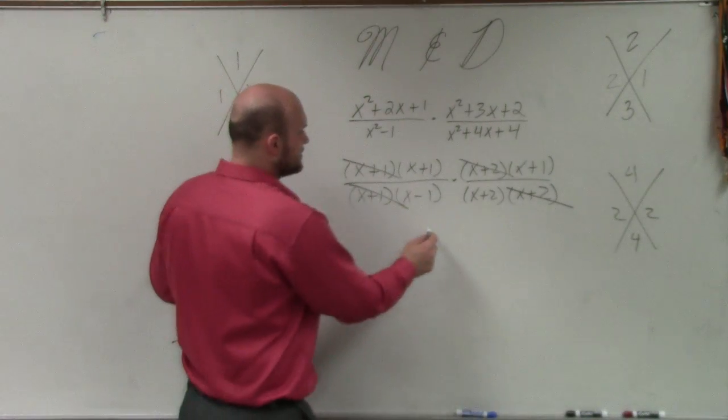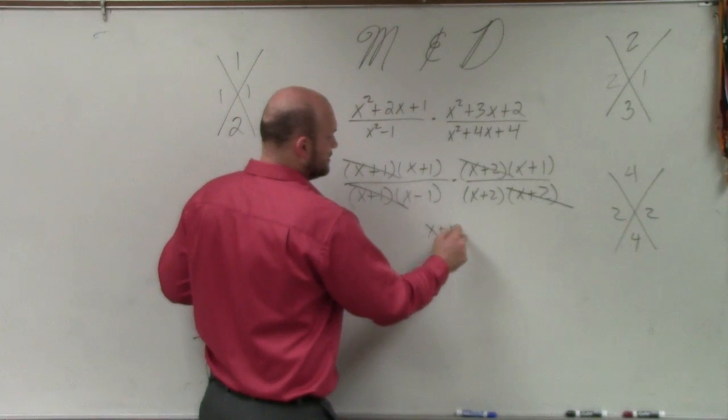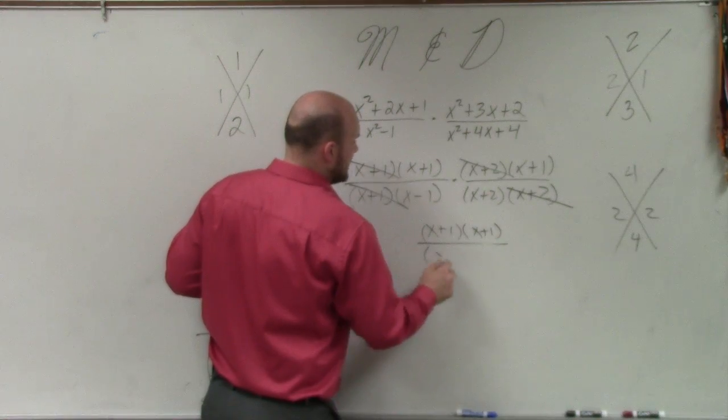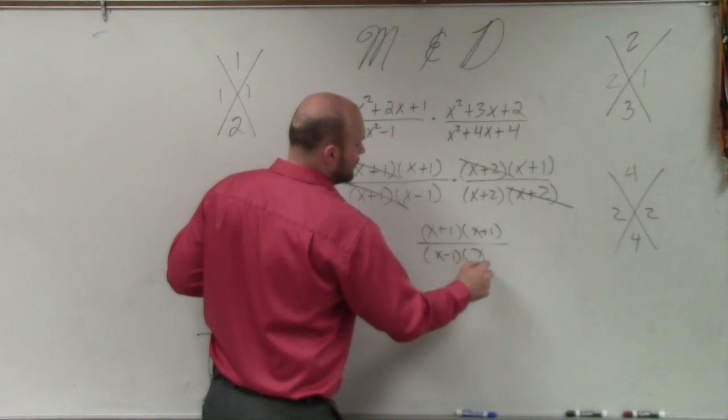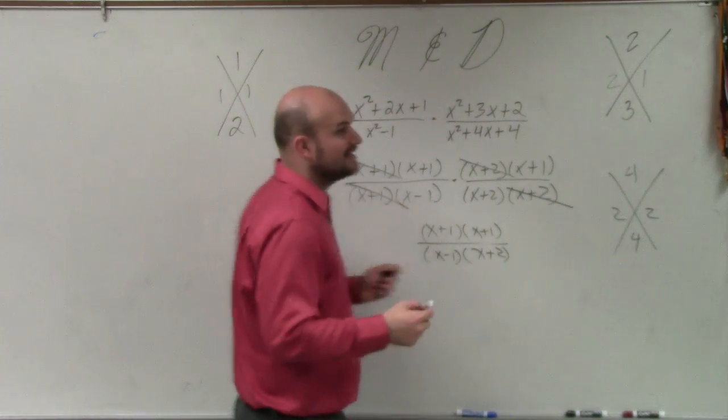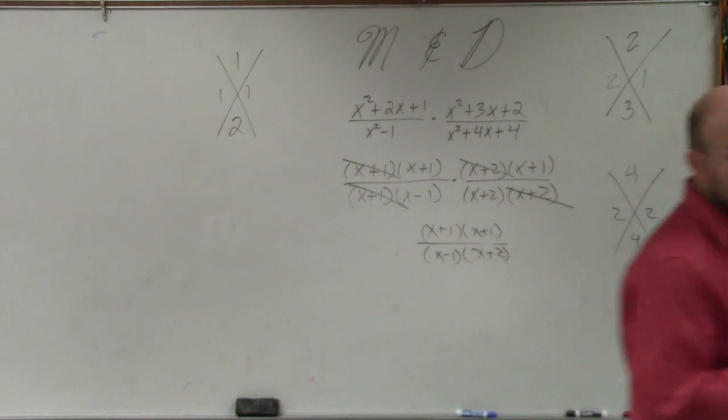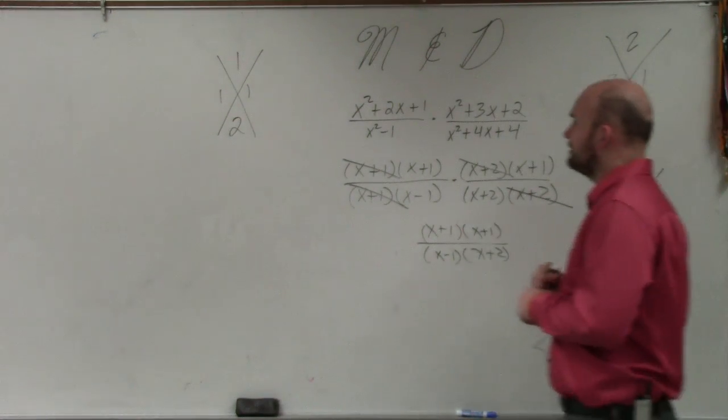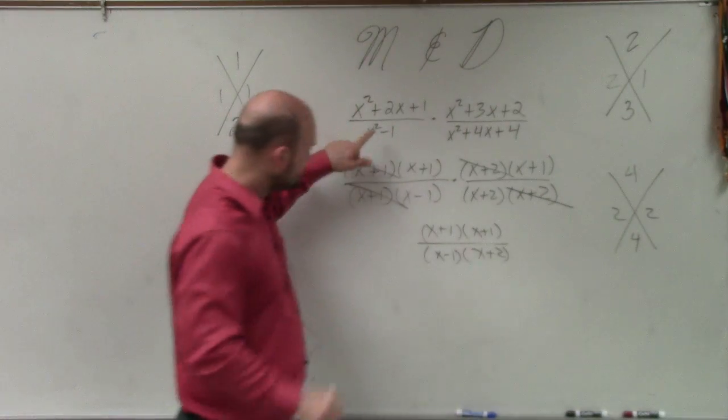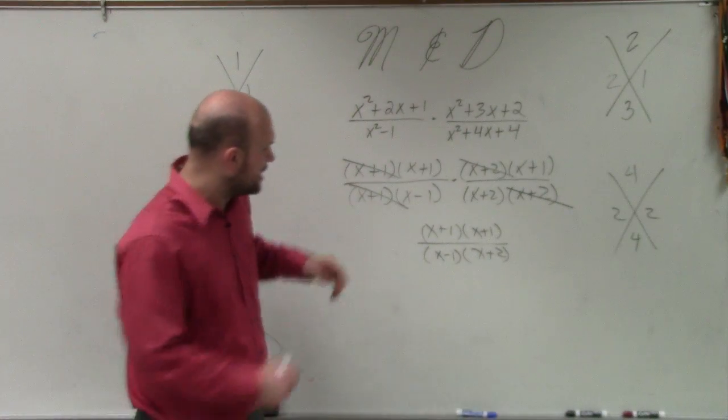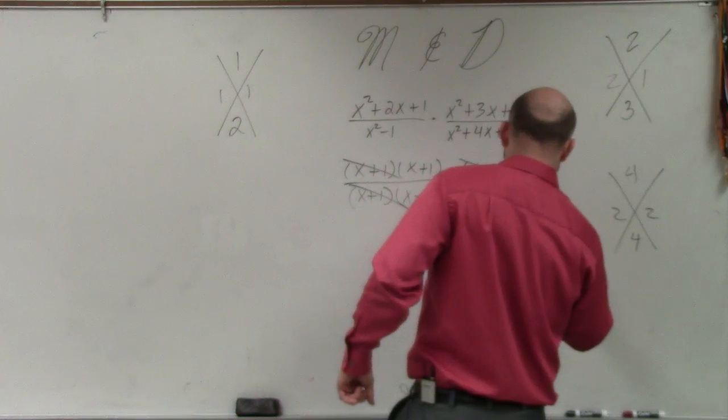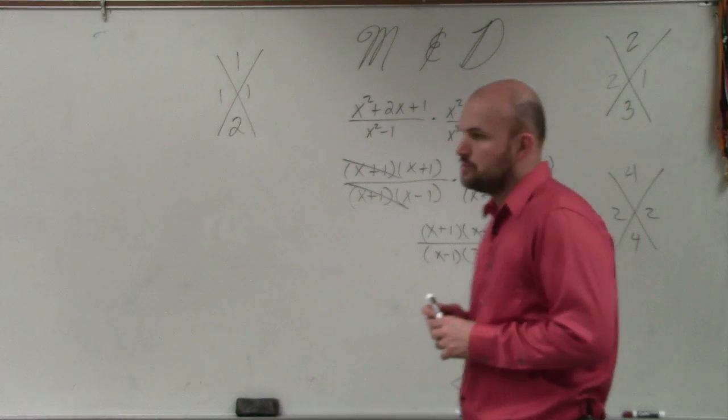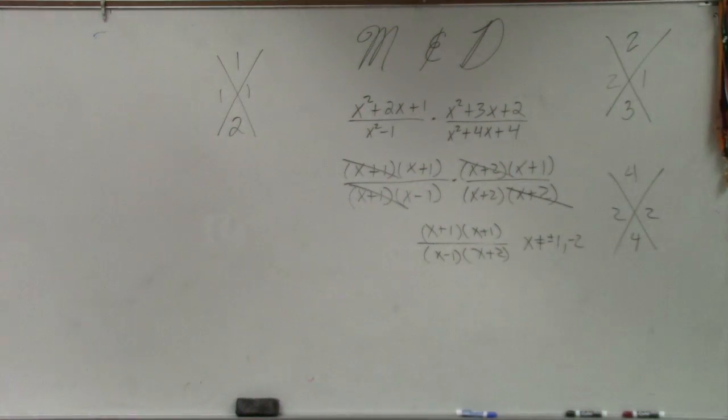Therefore, I'm left with x plus 1 times x plus 1 divided by x minus 1 over x plus 2. Now, I cannot divide further any of these problems. But I can write in my restrictions, which my restrictions on my original problem are x cannot equal plus or minus 1 and negative 2. Thank you.